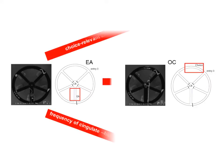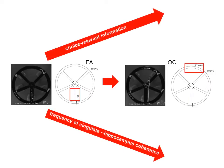Thus, over the course of a trial, increasing levels of choice-relevant information correspond to decreasing frequencies of theta coherence.